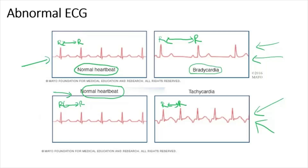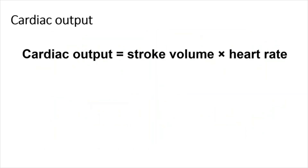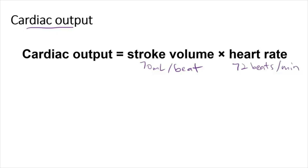Tachycardia can cause blood clots that result in stroke and also heart failure. Cardiac output is the volume of blood pumped by each ventricle in one minute. It can be calculated by multiplying the stroke volume by the heart rate. Stroke volume is the volume of blood pumped by each ventricle in one heartbeat — a single contraction — with an average of 70 milliliters per beat. The average heart rate is 72 beats per minute, giving an average cardiac output of about 5 liters per minute.